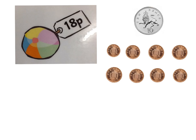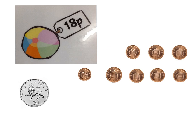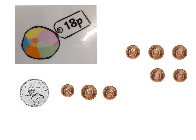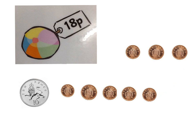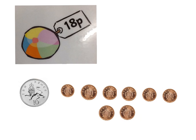If we wanted to buy something that costs 18 pence, again we don't have an 18 pence coin, so we would need to use the coins that we do have to make 18 pence. So we'll start off with that 10 pence, and we'll use 8 pennies to get to 18 pence, because 10 add 8 equals 18. So 10 pence and 8 penny coins make 18 pence.